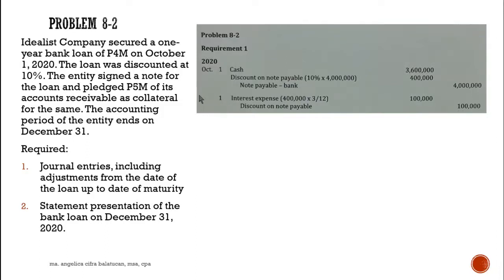On December 31, we amortize the discount on note payable. There are three months from October through November through December. The entry is: debit interest expense, credit discount on note payable — 100,000. That is 400,000 divided by 12 months times 3 months.